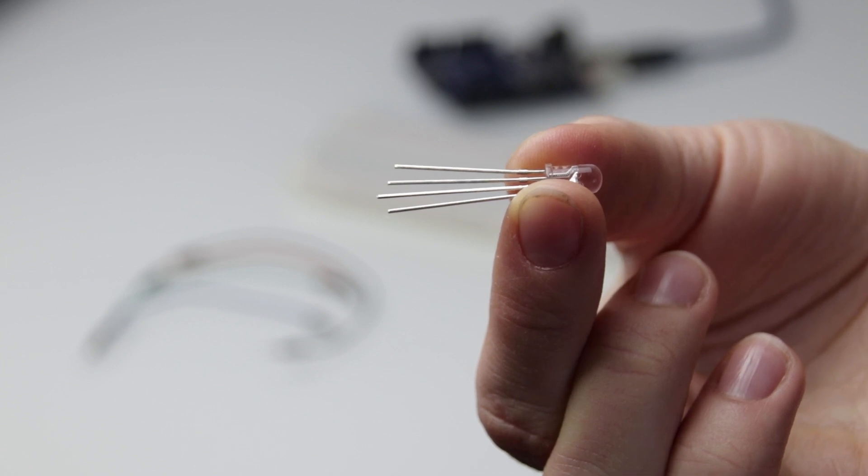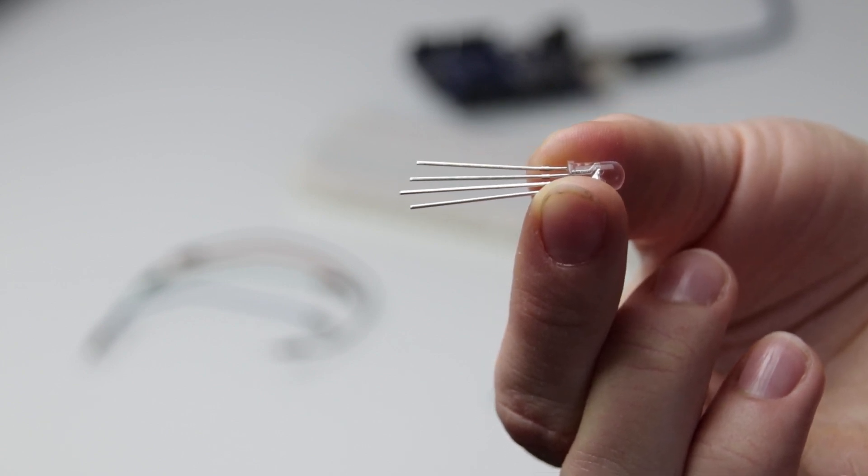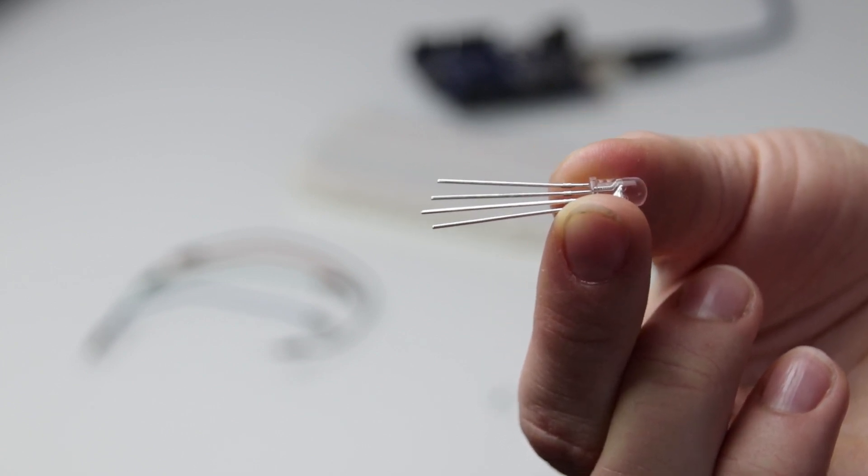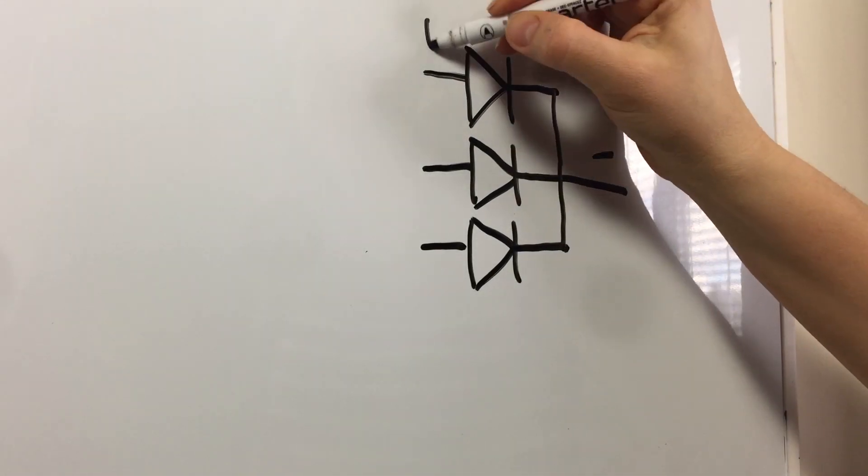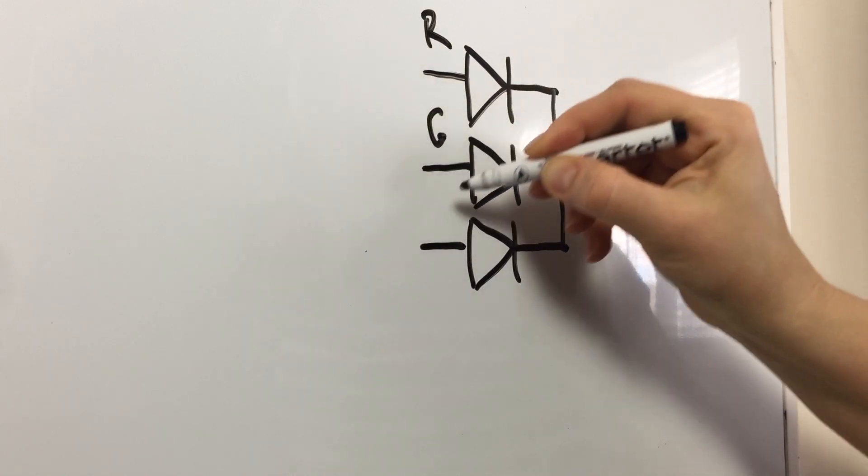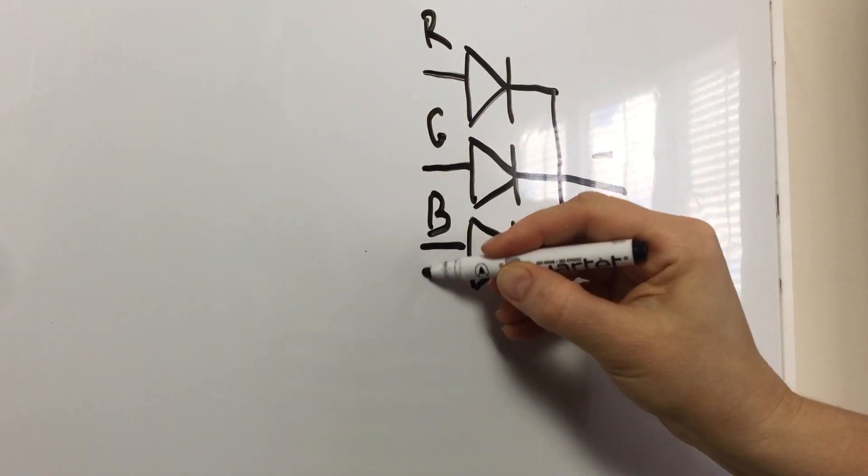The RGB LED has four leads. The single longest lead is connected to all three negative sides of the LEDs. The other three leads represent the positive connection of each of the single LEDs within the package.